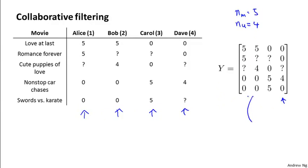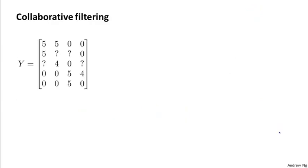And of course, the elements of this matrix, or the ij elements of this matrix, is really what we were previously writing as Y superscript i comma j. It's the rating given to movie i by user j. Given this matrix Y of all the ratings that we have, there's an alternative way of writing out all the predicted ratings of the algorithm.